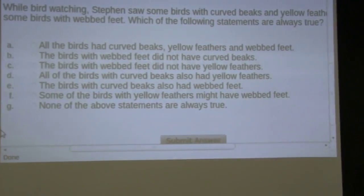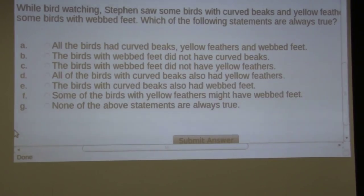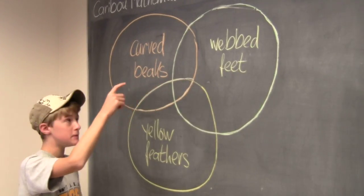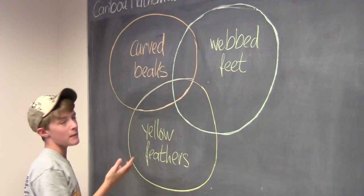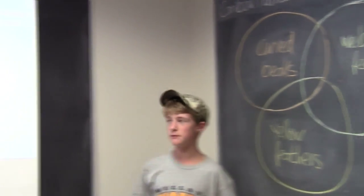So let's look at B. The birds with webbed feet did not have curved beaks. That would be true if they did not overlap, these two circles. But they may or may not, and since that's not always true, B would have to be false.